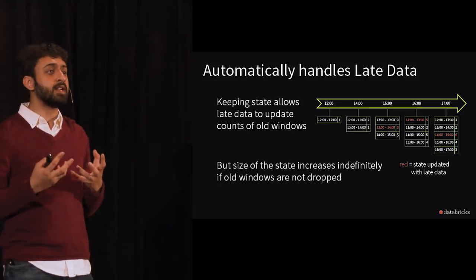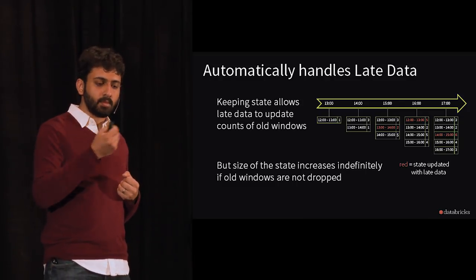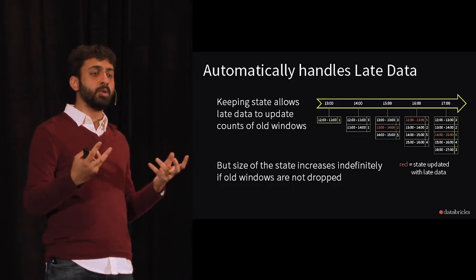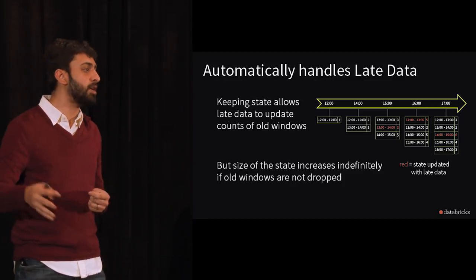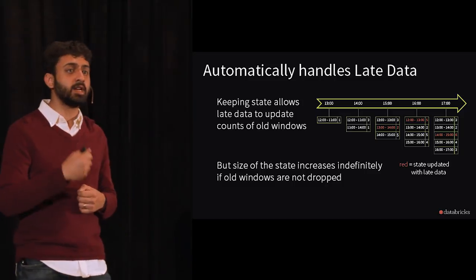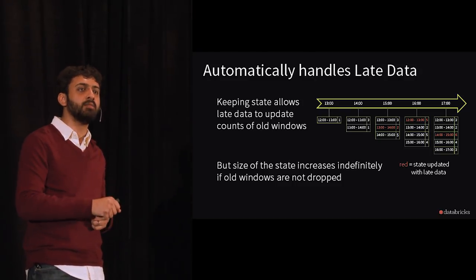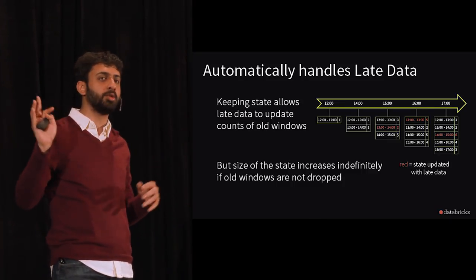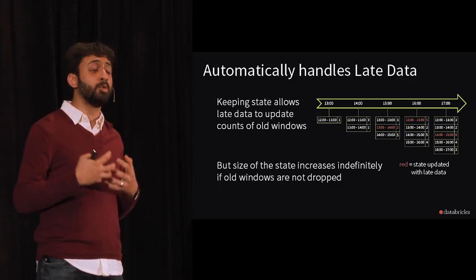This also automatically handles late data. If the engine receives a record that is out of order and late, it automatically identifies the older bucket to update rather than the newest, and since all that state information is already present, it updates the right bucket. However, the engine doesn't know when to stop updating old buckets — when it can close a bucket and discard it from state — so without bounds, the state will keep growing indefinitely.